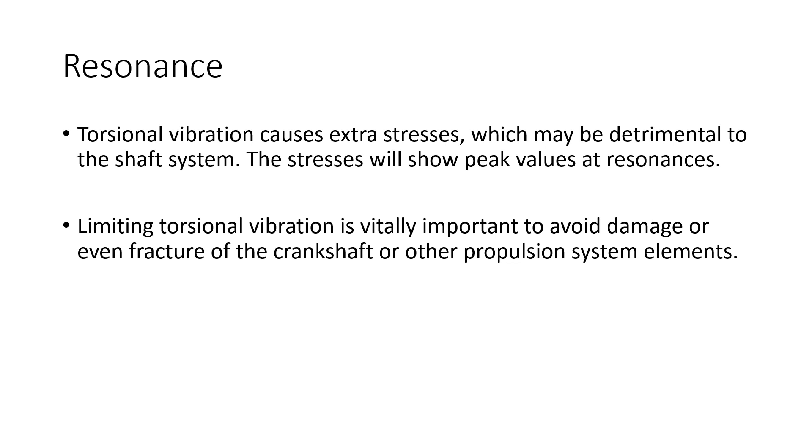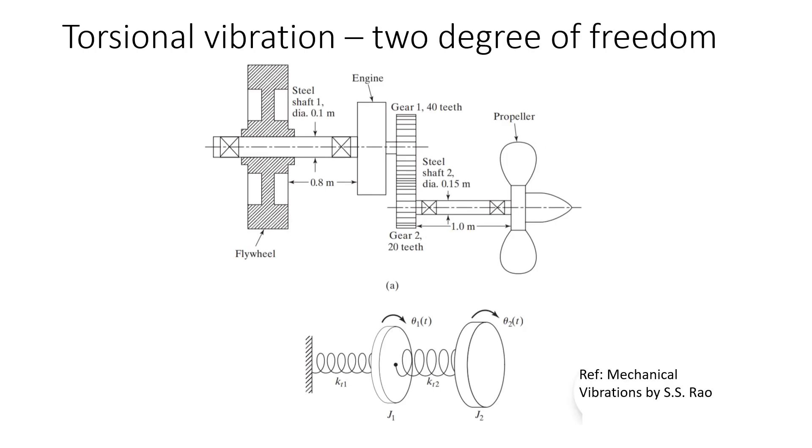Let us look at an example of a marine engine propeller to model it into a two degree of freedom system. We can see that there is a flywheel which is connected to the engine through a shaft and which is connected to the gears and then to the propeller. The flywheel can be considered as stationary or fixed because it has a very high mass moment of inertia compared to that of the other rotors like the engine and the propellers.